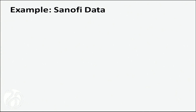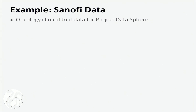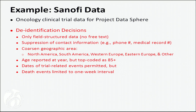Here's an example of what a statistically de-identified data set looks like. This came from an oncology clinical trial data set that was to be deposited at Project Datasphere. These are decisions backed out of statistical analyses, translated into plain language. First, we removed free text, since it's very difficult to control what shows up in natural language, so only field-structured data was kept. We removed contact information as direct identifiers. Geographic areas were coarsened to five regions around the world.